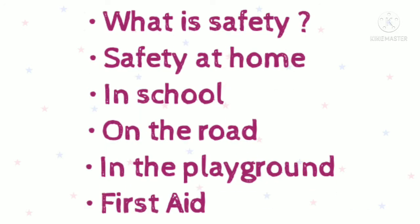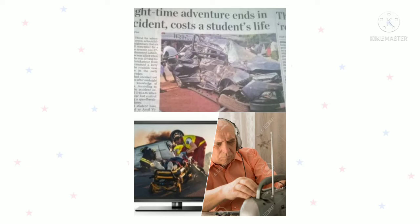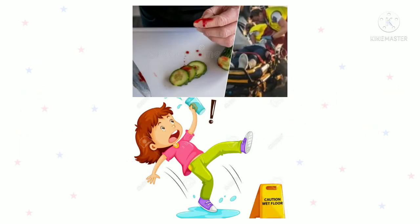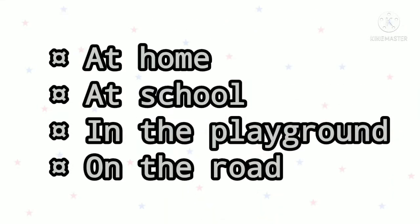We should follow safety rules at home, in school, on the road, and in the playground. Every day we read and watch about accidents in the newspaper, on radio and on television. An accident can occur anytime and anywhere. We do different types of activities throughout the day, but if we are careless, accidents may occur and we may get hurt. To prevent accidents we should always be careful and follow some safety rules, no matter whether we are at home, at school, in the playground or on the road.